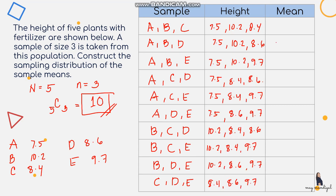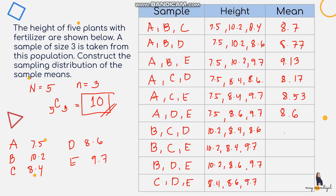After listing all heights, we compute the mean: since there are three observations per sample, we add all three heights and divide by 3. The means are approximately 8.70, 8.77, 9.13, 8.17, 8.53, and so on. All you have to do is add all the heights and divide by the number of observations, which is 3 — you're simply getting the average of the data for each sample.